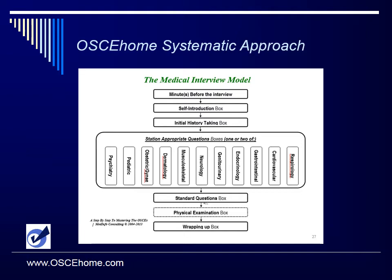This is the model. You have a few minutes before you go into the station or before you meet the patient in real life to gather information about them. Then you go into the self-introductory opening of the interview, where there are specific things you have to do and say. Then you go into the initial history-taking box — the chief complaint, exploring the chief complaint and the history of present illness. By now you have an idea of what the main body organ is for that complaint, so you choose one of these specific boxes, open it, and start asking the questions. Then you go into the standard question box — open it and ask the questions.